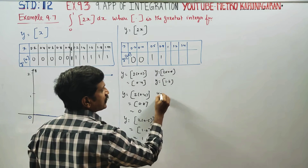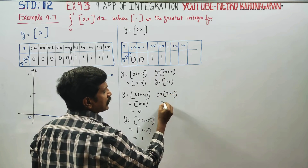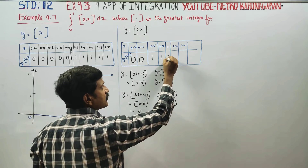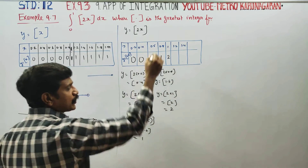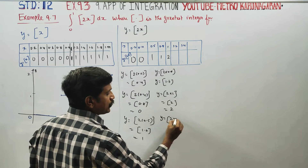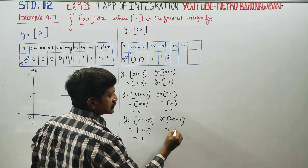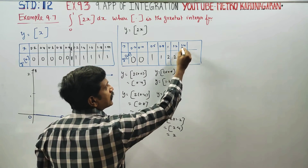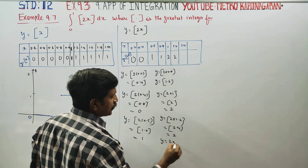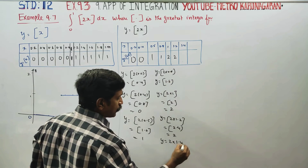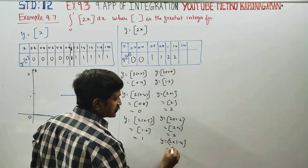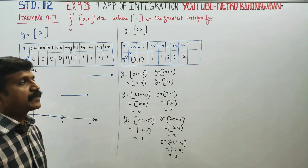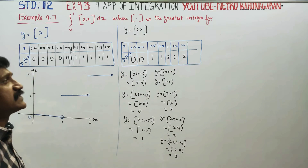For x = 1: y = 2 × 1 = 2, and the nearest integer value is 2. For x = 1.2: y = 2 × 1.2 = 2.4, nearest integer value is 2. For x = 1.4: y = 2 × 1.4 = 2.8, nearest integer is 2. And it goes on — these are some of the examples.